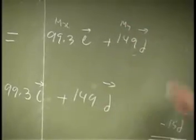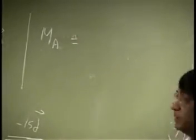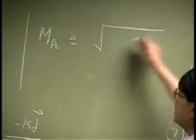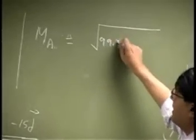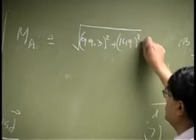If you really need the magnitude for MA, then you have to go through the square root of 99.3 square plus 149 square plus a 0 square.